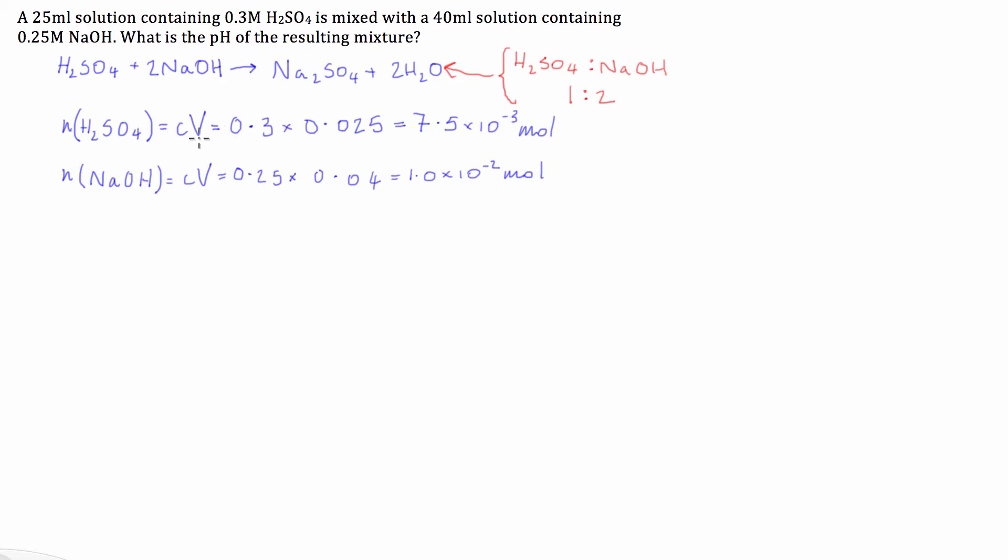Cool. So now that we have both moles of each solution what we can do now is we've got to work out what the limiting reagent of this equation or this mixture is going to be. Now the reason that we need that is because whatever the limiting reagent is the other one is going to be left over after all of the neutralisation that can be done is done.